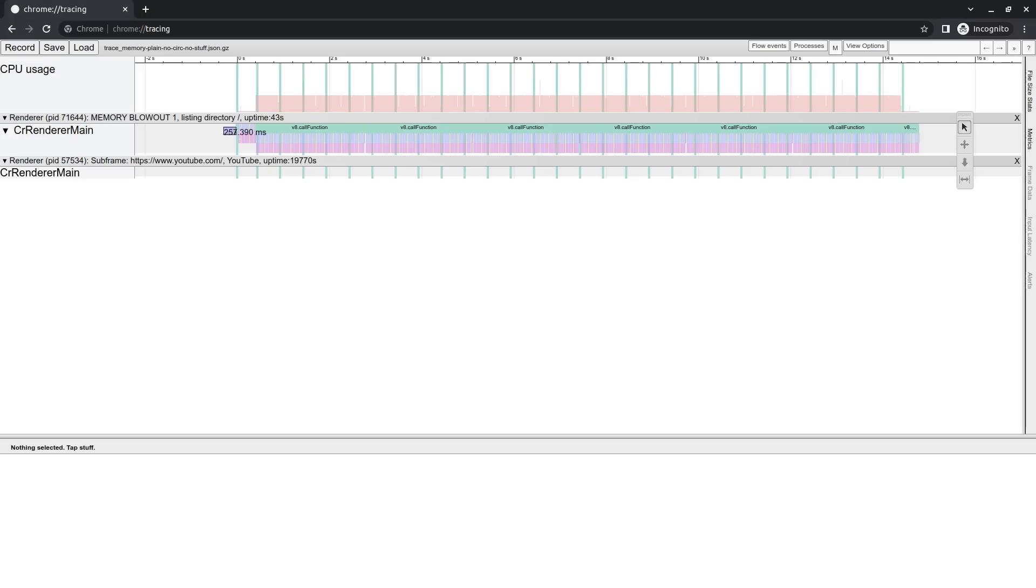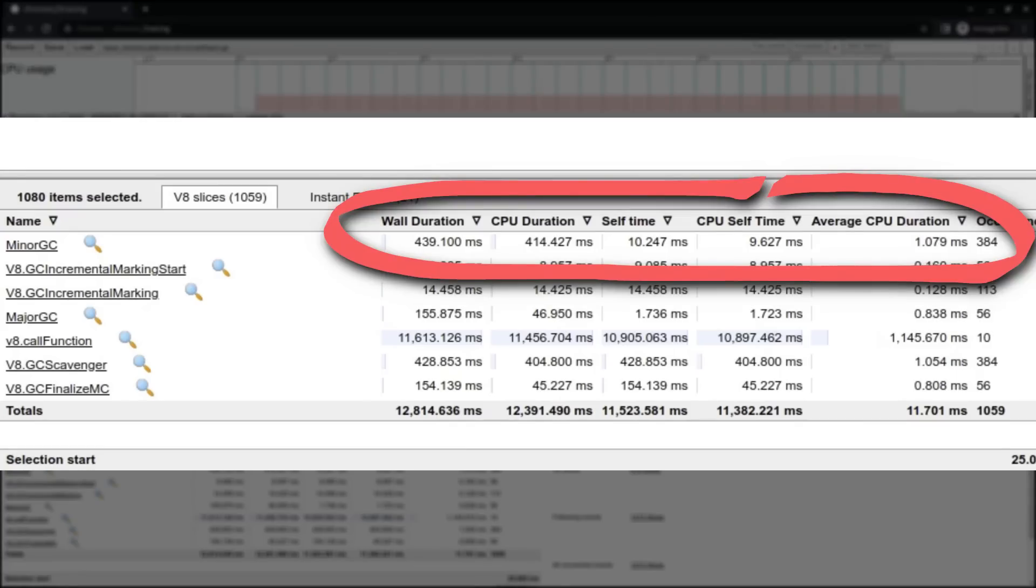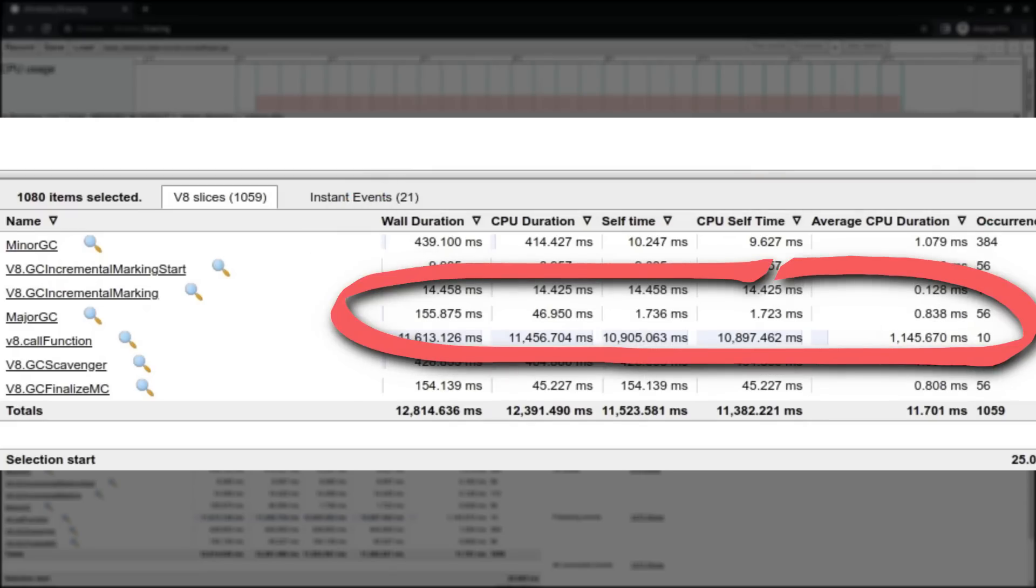So by looking at the trace of our first test we can actually select the first 10 seconds or so of the trace and we can see that there were 384 occurrences of minor GC averaging about 1.079 milliseconds each and 56 occurrences of major GC at around 0.838 milliseconds each. So our test is getting V8 to do some minor and major GCs.